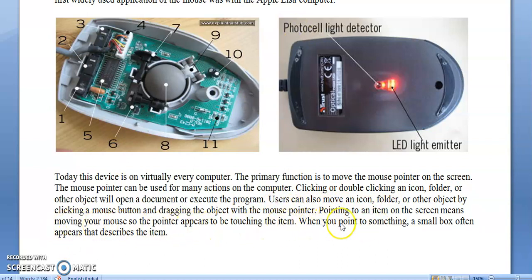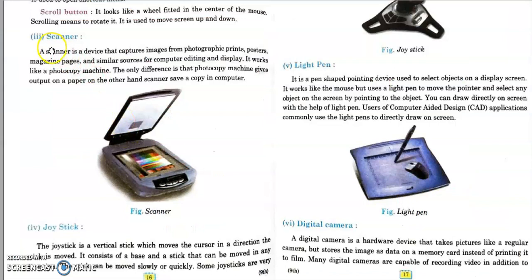When you point to something, a small box often appears that describes the item. When you select an object, it is highlighted, which lets you know it is selected. Next comes the scanner — a scanner is a device that captures images from photographic prints, posters, magazine pages, and similar sources for computer editing and display.